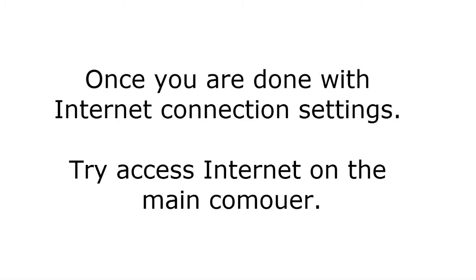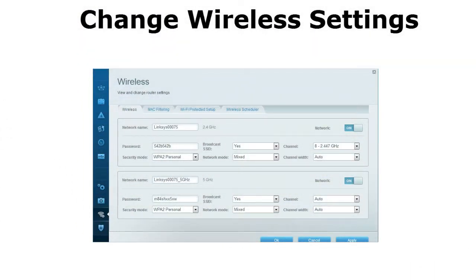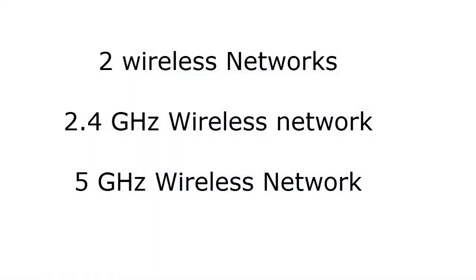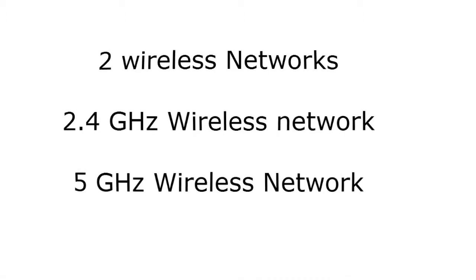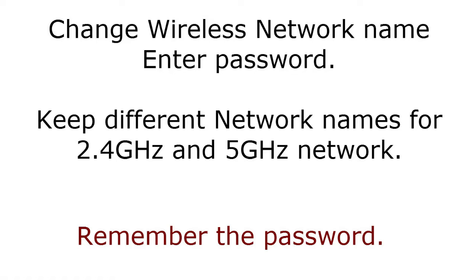Now we will change the wireless settings. Click on the Wireless tab. You will see two wireless networks on this router: the 2.4 GHz network and the 5 GHz network. If your computer supports both bands, it will see two different networks. You can change the network name of both — for example, name the first one 'Home' and the 5 GHz one 'Home-5GHz' so you can identify which network to connect to.